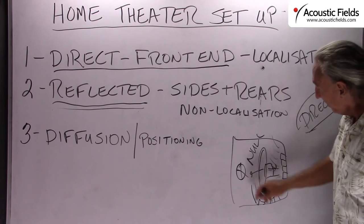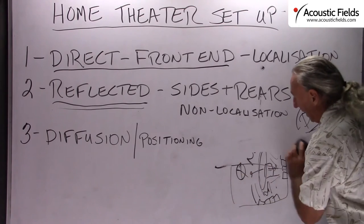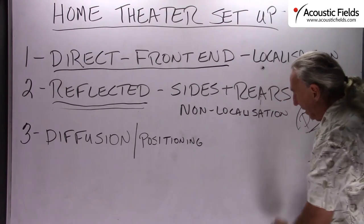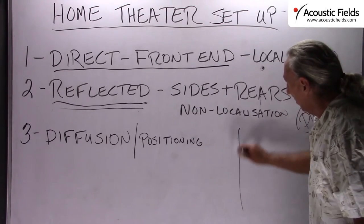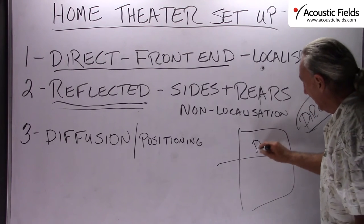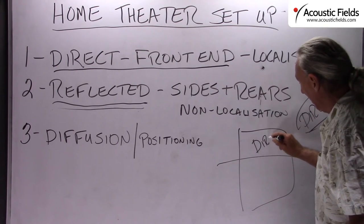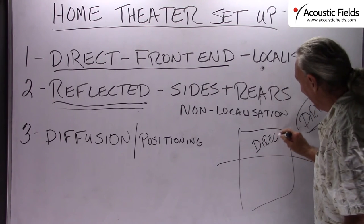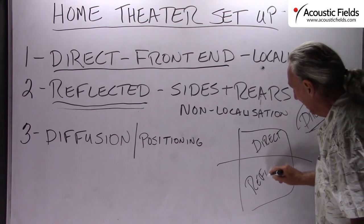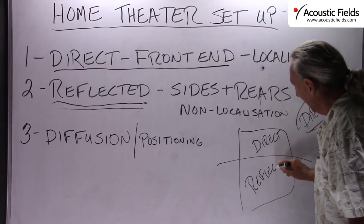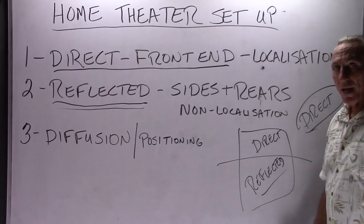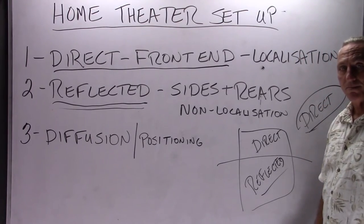So front of the house — the front of our home theater is all about the direct energy, but the sides and the rear are all about reflected energy. We want to enhance that, and one of the ways to do that is through diffusion.